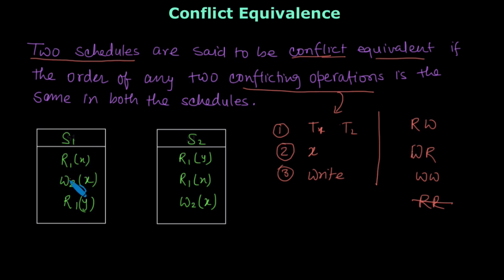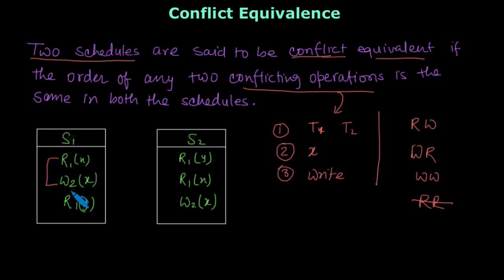Let's find out what the conflicting operations are in schedule S1. We have one write operation on variable x, and the other operation is also on variable x, from a different transaction — transactions 1 and 2. These two operations are conflicting: they belong to different transactions, act on the same variable, and at least one is a write operation.